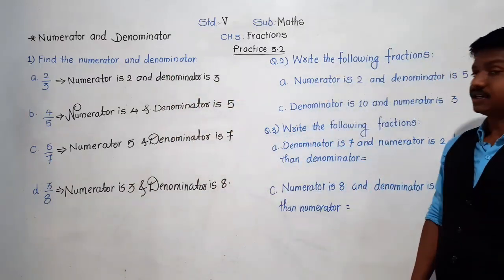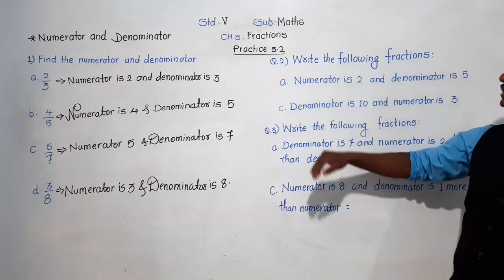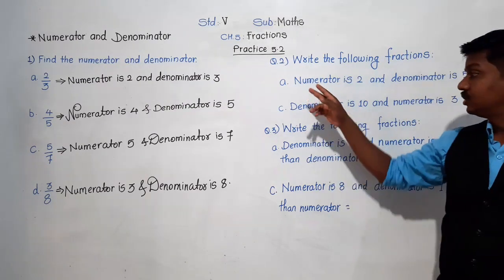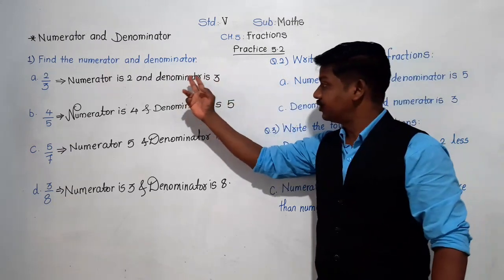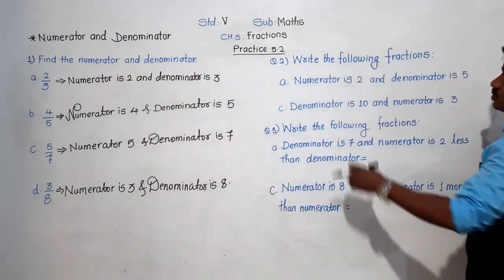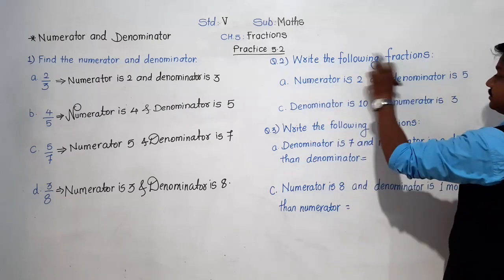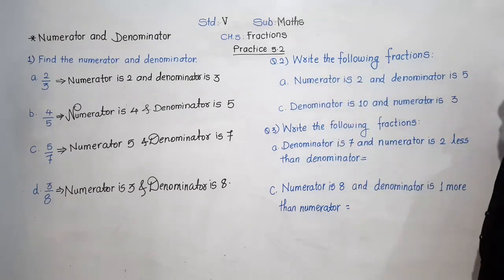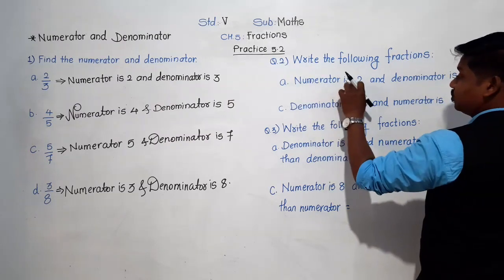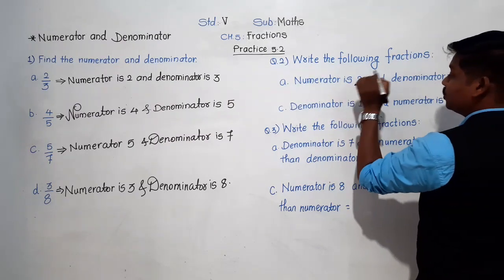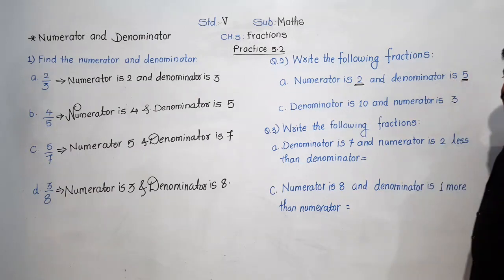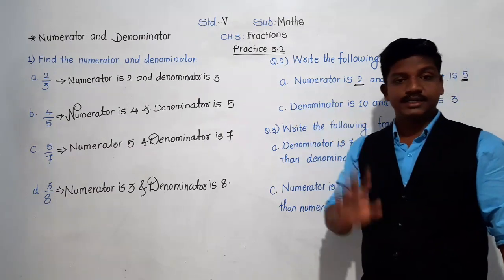Let's move on to the second question. The second question says: write the following fractions. The examples are given in sentence form and we have to write them as fractions. For example A: numerator is 2 and denominator is 5. When we write a fraction, we write the numerator above the bar — numerator is 2.